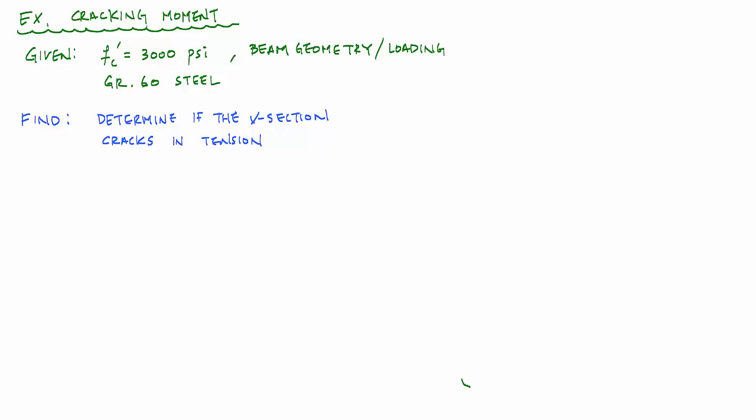Welcome back to Structure Free Learning. In this video we return to reinforced concrete design and we're going to do an example problem associated with the cracking moment — figuring out whether or not a beam or cross section has cracked in tension. We're given that f'c is 3000 psi, and we want to determine if the cross section is cracked in tension due to the loading shown.